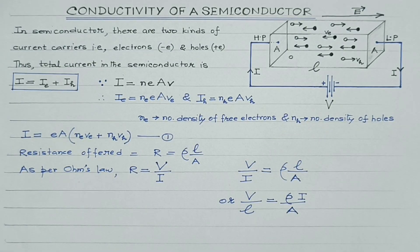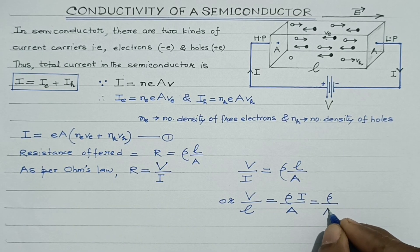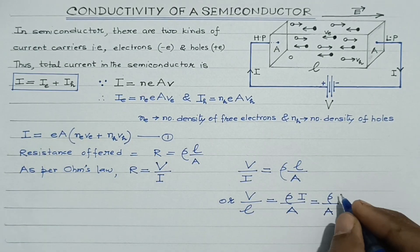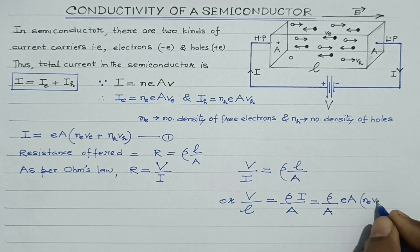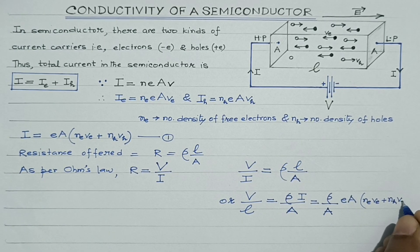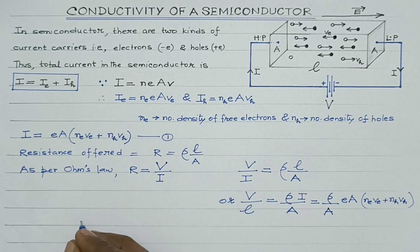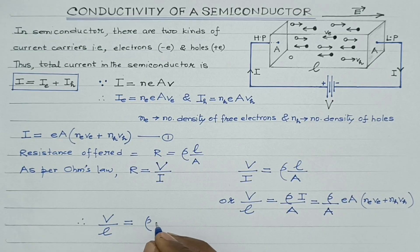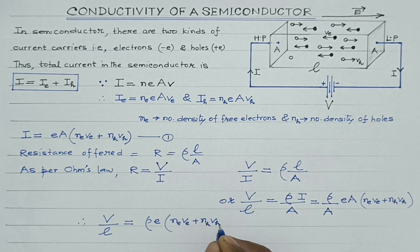Now students, what we can do is substitute the value of current from equation 1 over here. So we get V/L = (ρ/A) · e·A·(Ne·Ve + Nh·Vh). So A cancels out, and we are left with: V/L = ρ·e·(Ne·Ve + Nh·Vh).